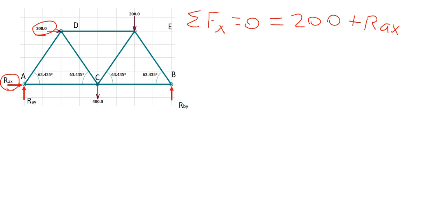Now, as we continue to isolate RAX and solve for it, we get that RAX is equal to negative 200 pounds.